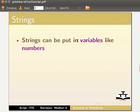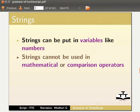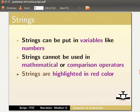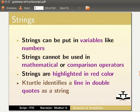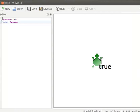Let us now see how strings work in this application. Strings can be put in variables just like numbers. Strings cannot be used in mathematical or comparison operators. Strings are highlighted in red color, and KTurtle identifies any text in double quotes as a string.